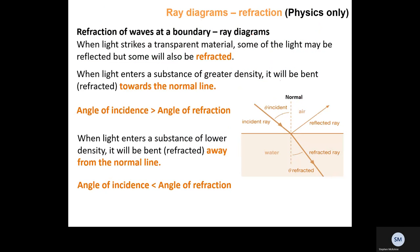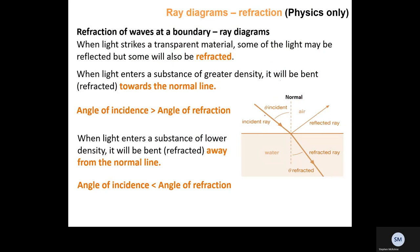Refraction of waves at a boundary — using ray diagrams to see this. When light strikes a transparent material, some of the light may be reflected but some will also be refracted, as shown in the diagram. A ray of light is shown using a line and should always include an arrow. If it is going into a new medium — for example from air into water — we call it an incident ray.